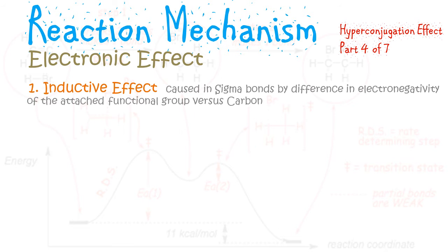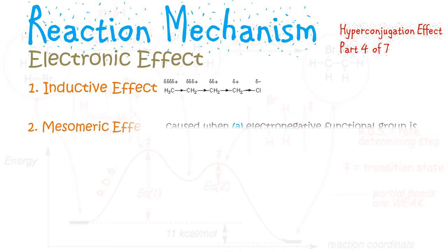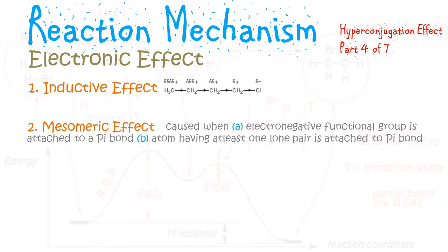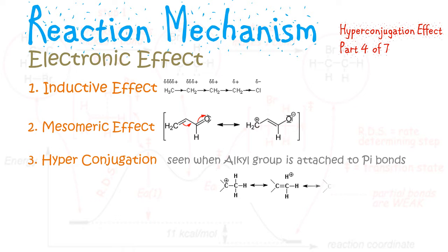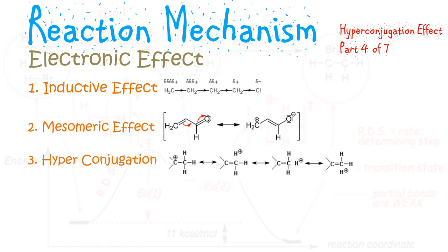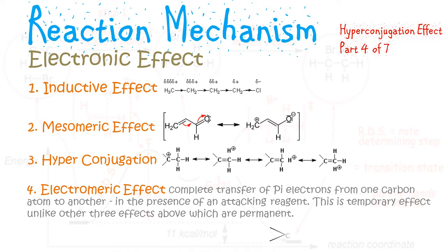...mesomeric effect, which is transmitted through the pi bonds; hyperconjugation effect, which is transmitted through the overlap of pi and sigma bonds; and electromeric effect, which is a temporary effect in the presence of attacking reagent.